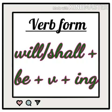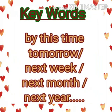For 'I' and 'we' we can use shall plus be plus verb plus ing, and for other subjects like you, they, he, she, it, and for singular and plural nouns, we can use will plus verb plus ing. Keywords to denote future continuous tense are: by this time tomorrow, by this time next week, by this time next month.